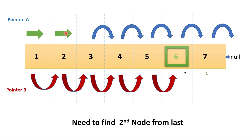With this two-pointer approach, moving pointer A two steps forward takes two rotations, and then both pointers move five rotations together — seven total. This saves some time compared to the previous approach. This is the actual approach to solve the kth node from last problem. I will provide the programming part as a GitHub link in the description box — first try it yourself, then refer to the code. Thank you for watching.